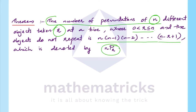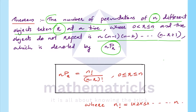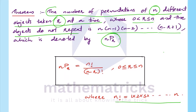That is the number of permutations of n different objects taken r at a time — this is nPr. N objects are selected with the condition 0 < r ≤ n. When r equals n, the objects are not repeated. The formula for nPr is equal to n factorial divided by (n minus r) factorial.